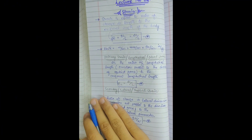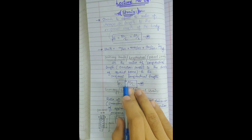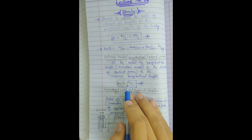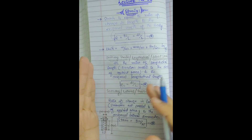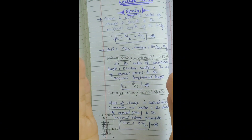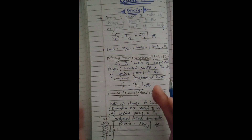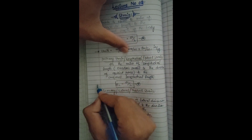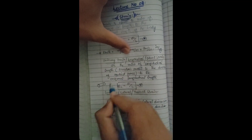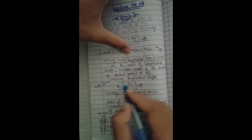There are two types of strains: first is primary strain and second is secondary strain. Primary strain is also called longitudinal strain. It is the ratio of the change in longitudinal length — in the direction parallel to the applied force — to the original longitudinal length. For example, if we have a tube, the change in length along the direction parallel to the applied force is the longitudinal strain.